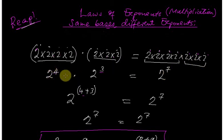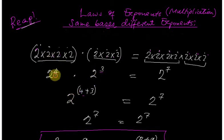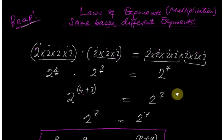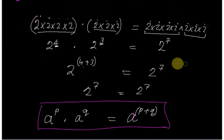Written in power form, the first group is two to the power four, and the second is two to the power three. If you add the exponents, you get two to the power four plus three, which equals two to the power seven — the same as when we combined them together.